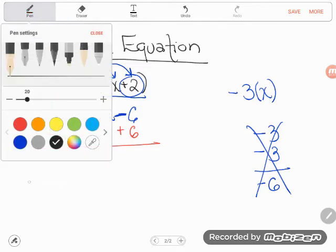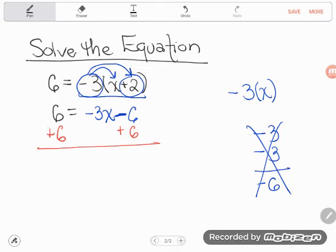Now, I can do whatever I want to an equation as long as I do it to both sides, so you're going to see that I jumped across the equal sign and did it over there as well. So what is 6 plus 6? Well, it's 12.